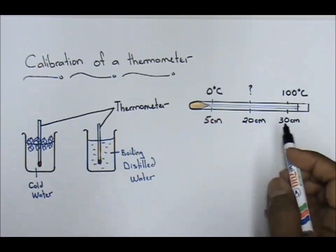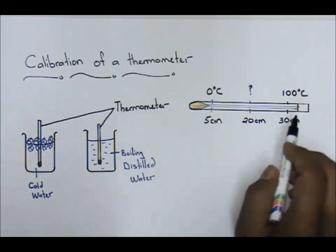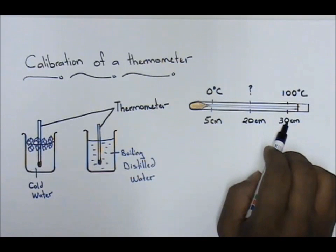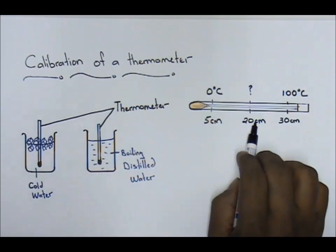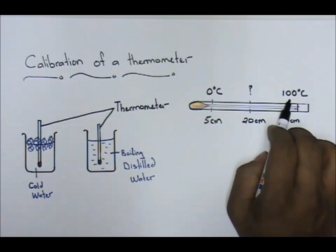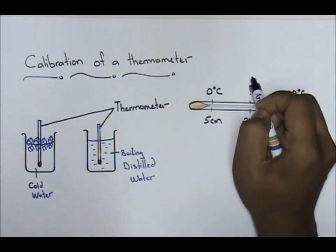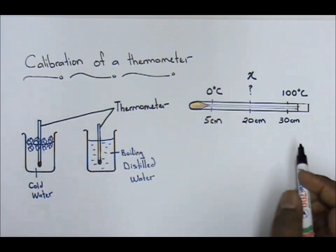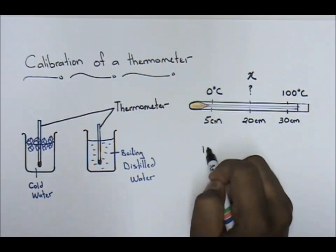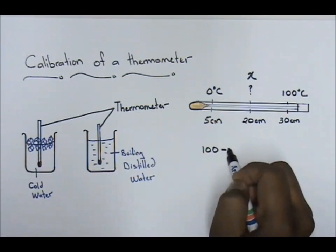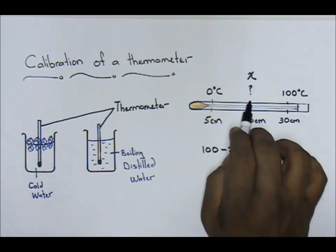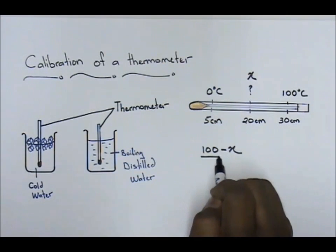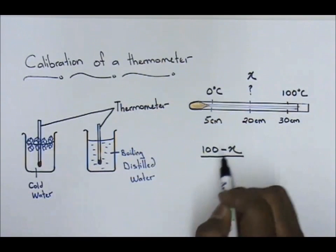Now we're going to use a method. 30 minus 20. Let's just use this as x because we don't have the value. We just want to label this as x. So 100 minus x, divide by 30 minus 20.